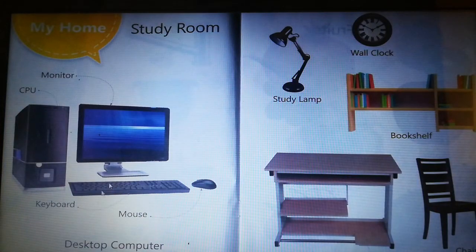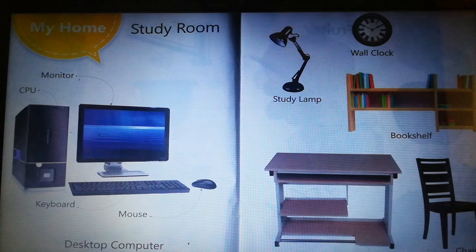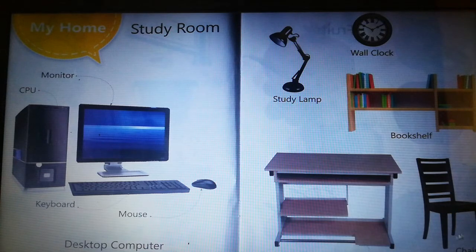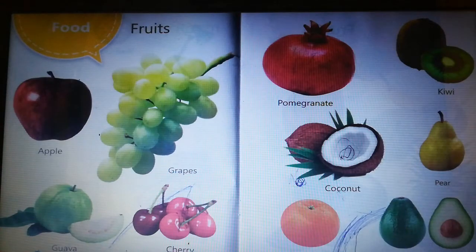Next, study room: monitor, CPU, keyboard, mouse — this is a desktop computer — wall clock, study lamp, bookshelf, computer or study table, chair. These are things present in the study room.